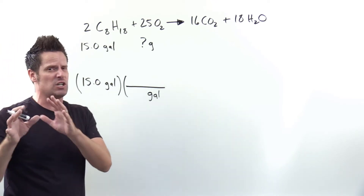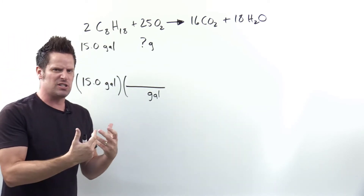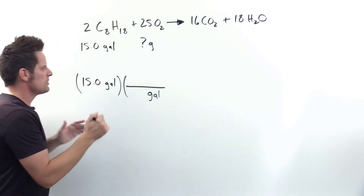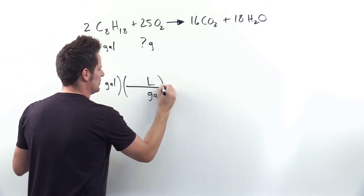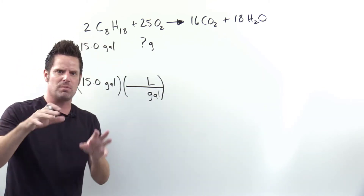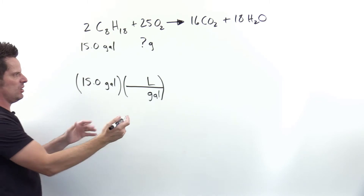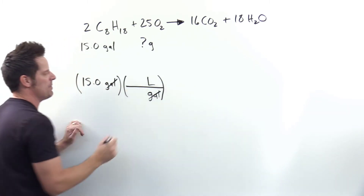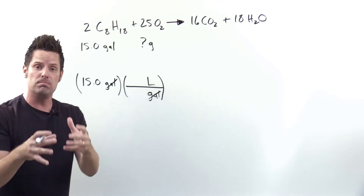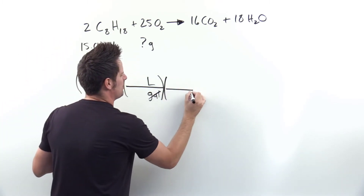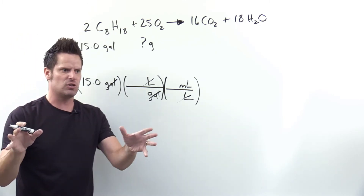If I can numerically relate gallons to liters — and on an exam I would give students this conversion — I can cancel gallons and get closer to my answer. Then I lay down another set of parentheses with liters in the denominator to cancel, and milliliters in the numerator, since the problem supplies a density in grams per milliliter. Liters and milliliters are directly relatable. Then another set of parentheses with milliliters in the denominator, and I can directly relate milliliters to grams in this case using the density of octane.